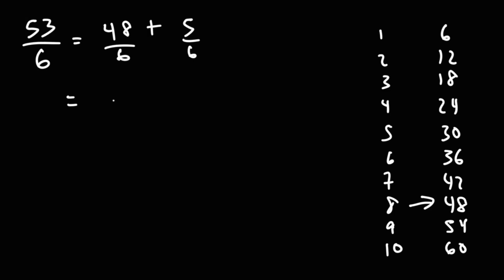Now, 48 divided by 6 is 8. And 8 plus 5 over 6, as a mixed number, we can write that as 8 and 5 sixths.